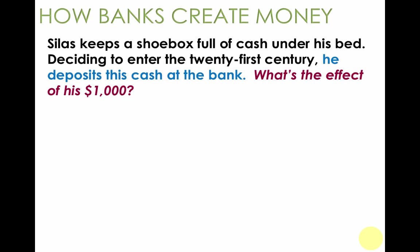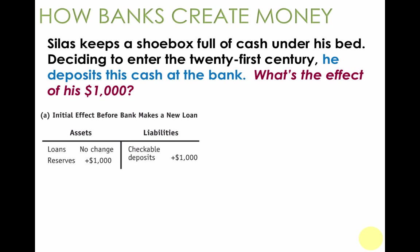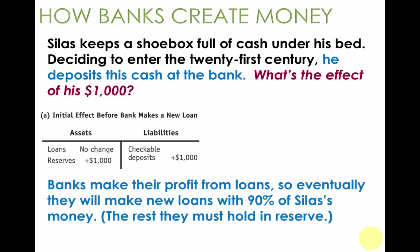Suppose Silas keeps a shoebox full of cash under his bed and then decides to move it into the bank. What's the effect of his $1,000 hitting a bank for the first time? They have not had a chance to loan it out yet, so loans are no change. But on the checkable deposit side, they've received $1,000 worth of deposits and $1,000 worth of reserves on the asset side. If it's a for-profit bank, they're going to want to loan out as much as they can of Silas' $1,000 deposit.